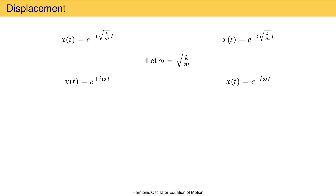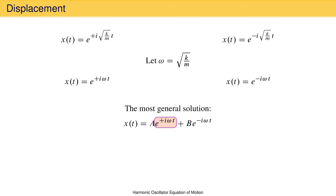Whenever a linear differential equation has two solutions, the most general way to write all possible solutions is as a linear combination. For our system, the most general expression for displacement is some constant a times e to the positive i omega t plus a different constant b times e to the minus i omega t. You can pick either solution by adjusting the constants: set b equal to zero for the first, or a equal to zero for the second, or pick a combination of both. The problem is that the expression for displacement contains the imaginary number, which is inconvenient.